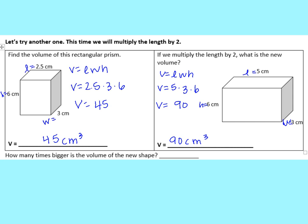Once you've tried those on your own, go ahead and check your work here. The volume for the first one is 45 centimeters cubed, and when you multiply the length by 2 in the second one, you end up with a volume of 90 centimeters cubed. So 90 divided by 45 equals 2 — this volume is twice as big as the first shape. That makes sense because the length was multiplied by 2, giving a scale factor of 2. The new volume formula is V = 2 × length × width × height.